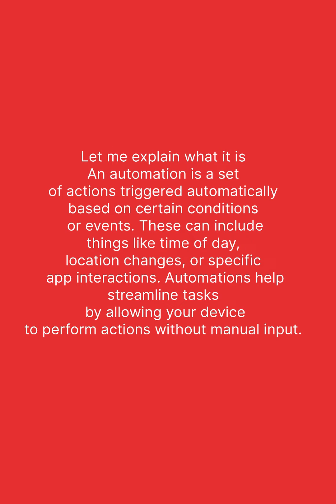Let me explain what it is. An automation is a set of actions triggered automatically based on certain conditions or events. These can include things like time of day, location changes, or specific app interactions. Automations help streamline tasks by allowing your device to perform actions without manual input.